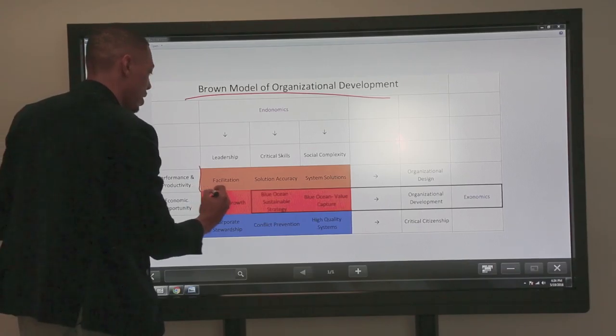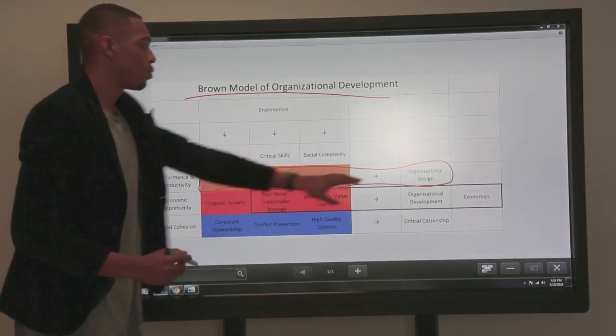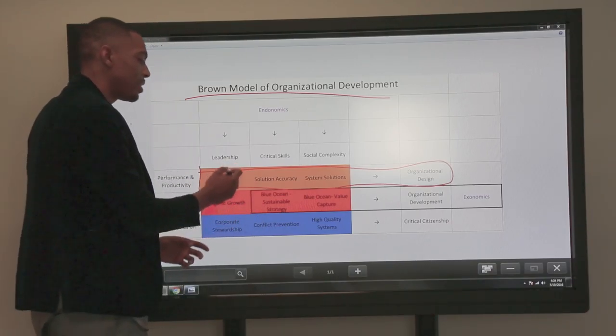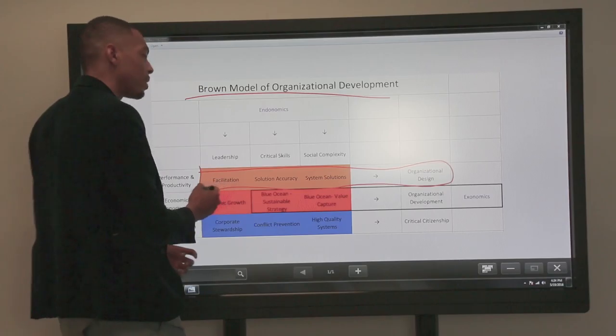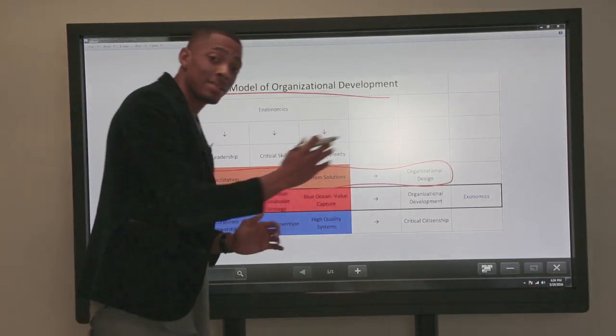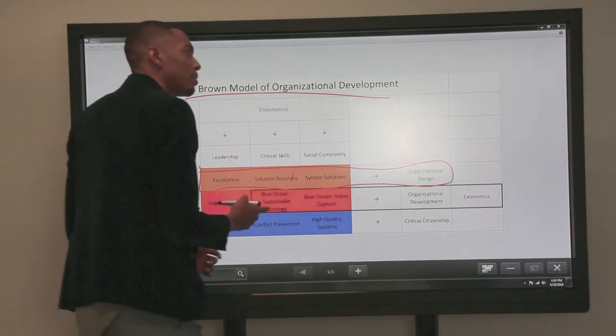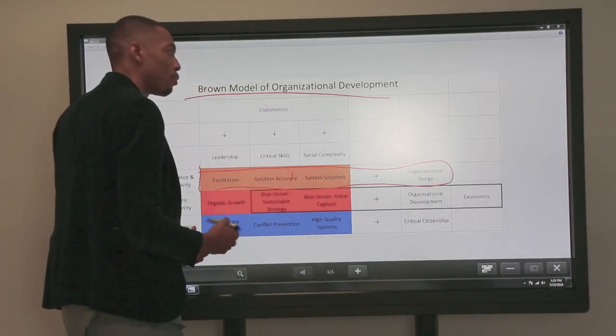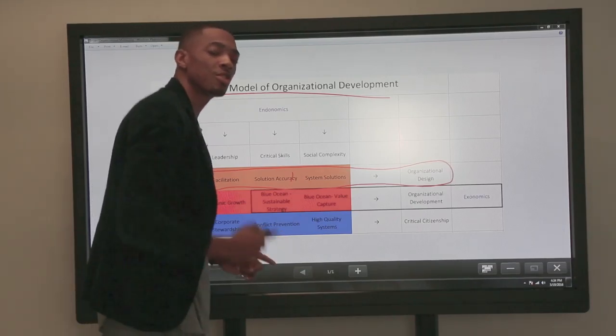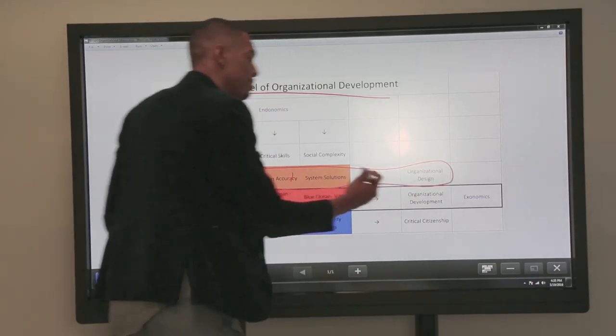At the performance level, you get what I know to be organizational design. When I'm going in and working with companies, I'm generally trying to create leaders that can facilitate the exchange of information, which is motivation, inspiration, giving guidance and direction. Solution accuracy means that when somebody's trying to problem solve, the responses they're coming up with are actually reflective of what an organization needs. When you're looking at social complexity, you're getting system solutions. You're not getting one person's opinion as much as you're leveraging an entire network in order to come up with a better solution to problems.